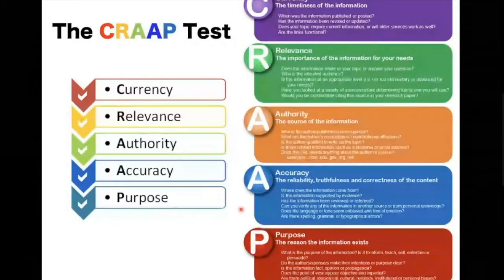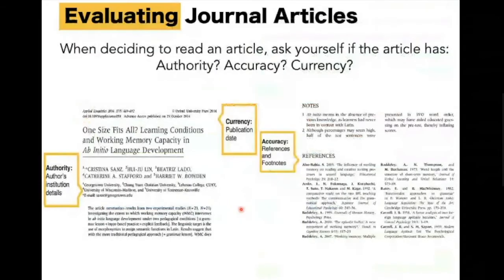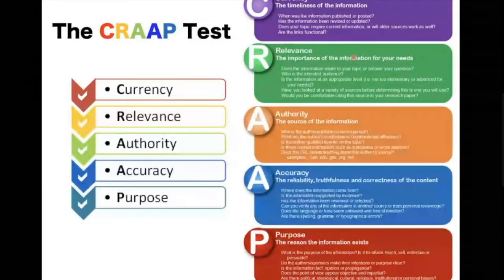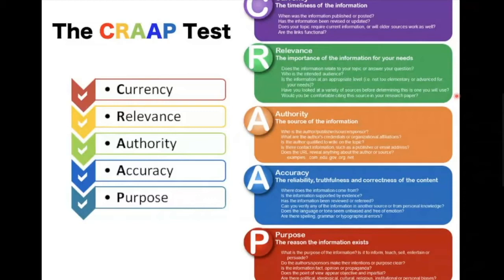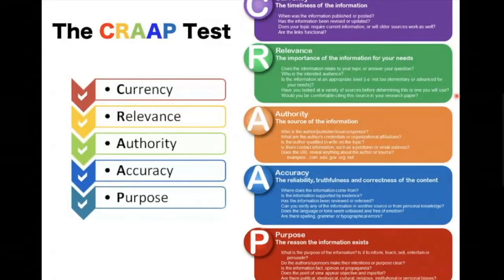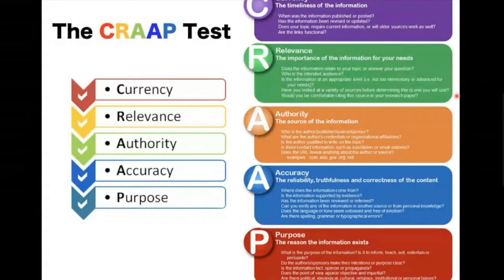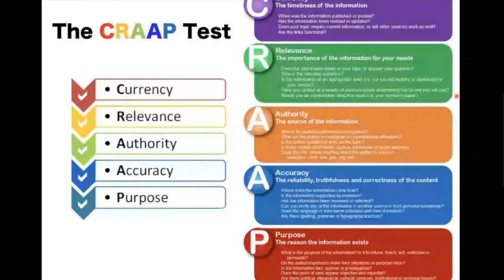For journal articles, you can assess authority, currency, and accuracy. Currency means knowing when the information was published or posted — is it current, and has it been revised up to date? Does the topic require current information? Depending on your work, the best currency would be the latest five years — for example, from 2016, 2018, or 2019.